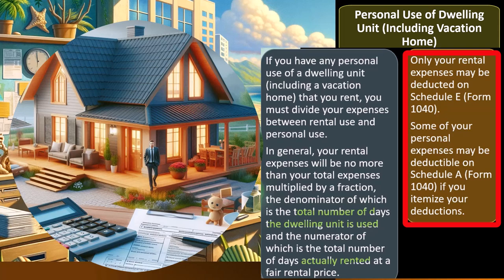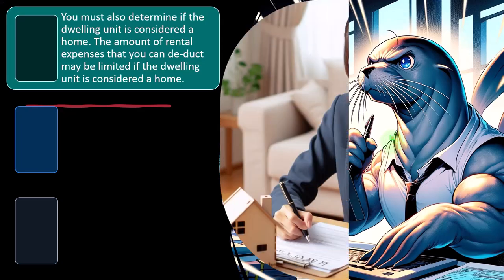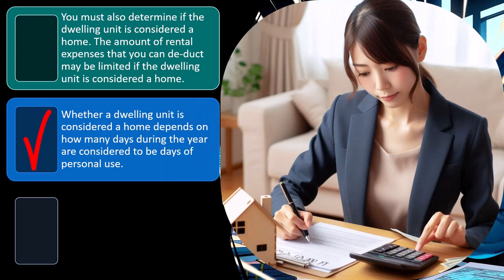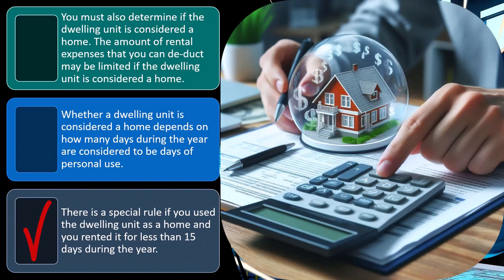With other expenses like depreciation, repairs, and maintenance on the home, you generally cannot deduct the personal-use portion on Schedule A, but you may be able to deduct the business portion on Schedule E. You must also determine if the dwelling unit is considered a 'home,' because the amount of rental expenses you can deduct may be limited. Whether a dwelling unit is considered a home depends on how many days during the year are considered personal use days.